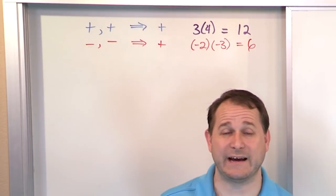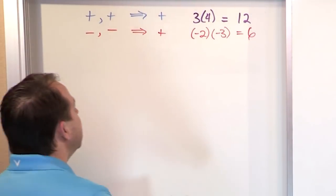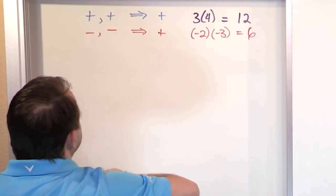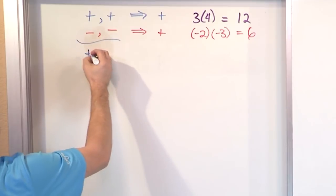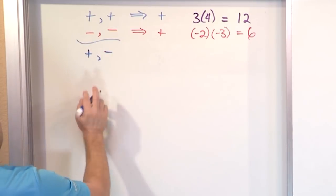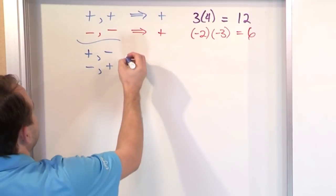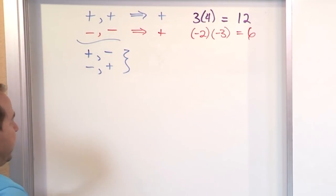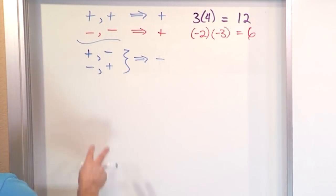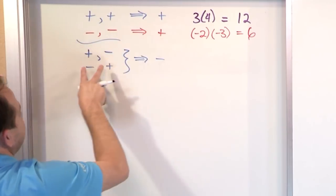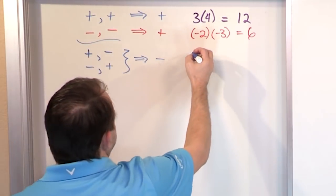The easy way to remember multiplication is: if the two signs of the things you're multiplying are the same — either both positive or both negative — the answer you get is always positive. The same rules also apply to division. When you have the same signs, you get positive answers. But when you have different signs, you get a negative quantity.